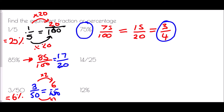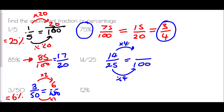For 14 over 25, to turn that into a percentage I need a fraction over 100. How do I turn 25 into 100? Multiply by 4. So I do the same at the top: 14 times 4 — to do this quickly, times by 2 then by 2 again: 14 doubled is 28, doubled again is 56. So 14 over 25 is exactly the same as 56 percent.